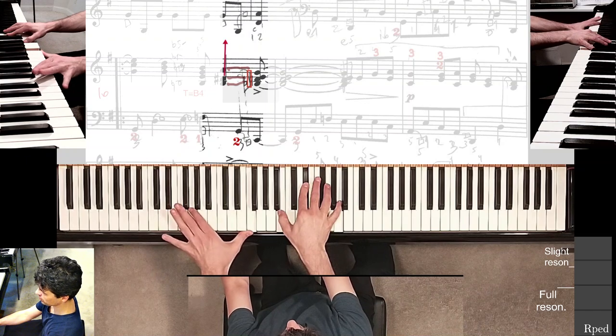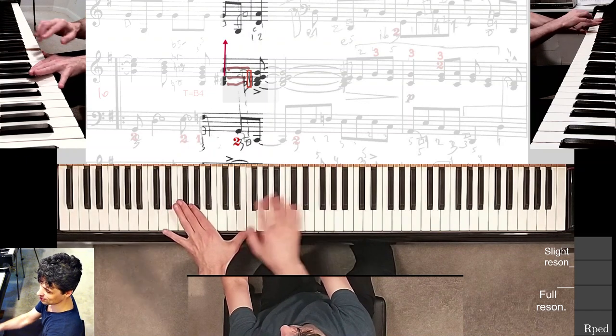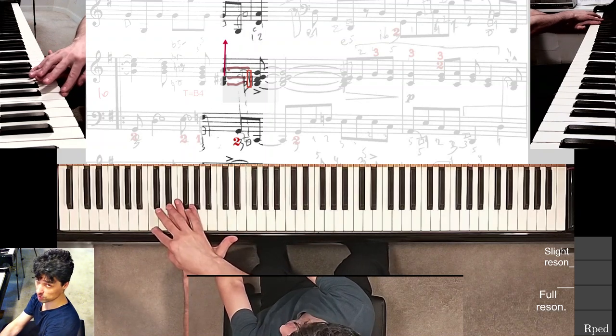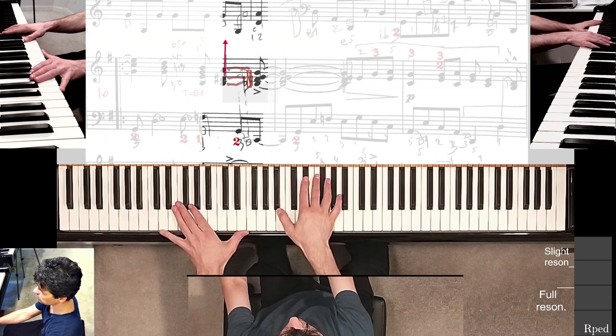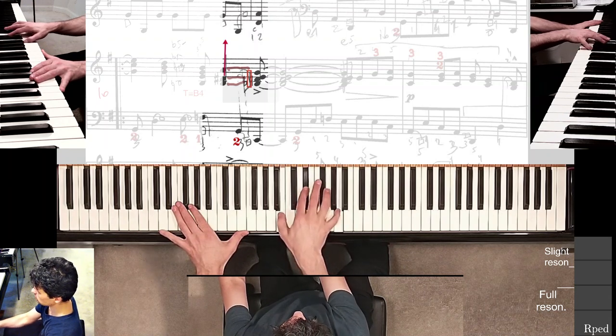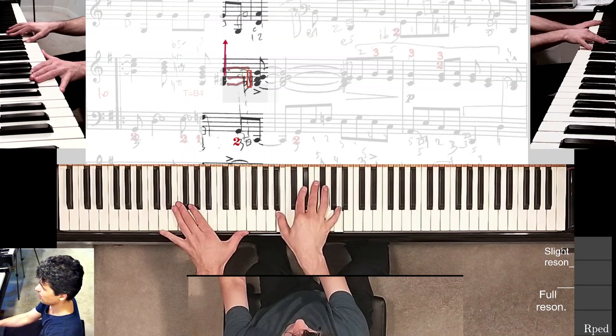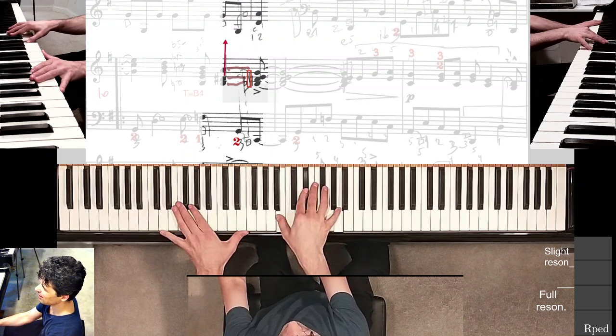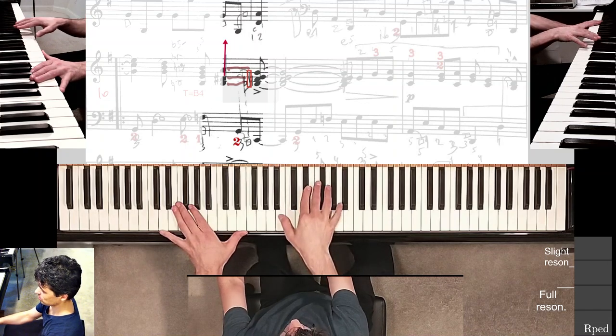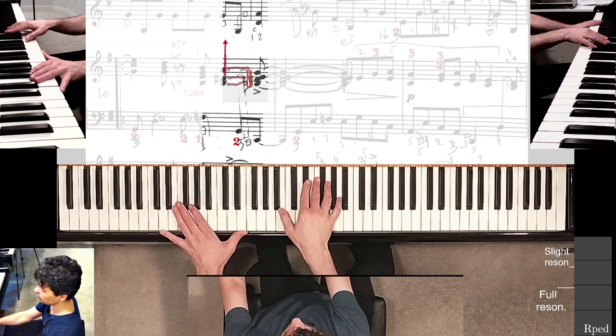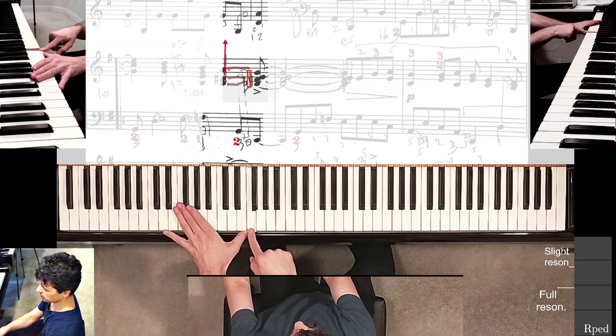So holding both of those down now and I'm getting ready to strike the G, and you can see that I'm not really yet over this bottom C with my pinky so that's going to possibly be a problem. And then I'm going to kind of play that right hand chord on a diagonal as I try to move my hand inside the keyboard, but already I've done that. I'm just holding it, holding the F.